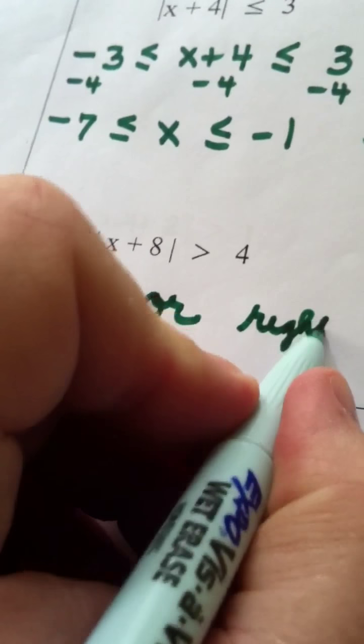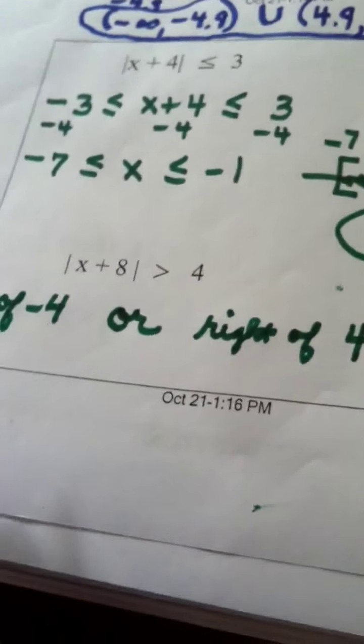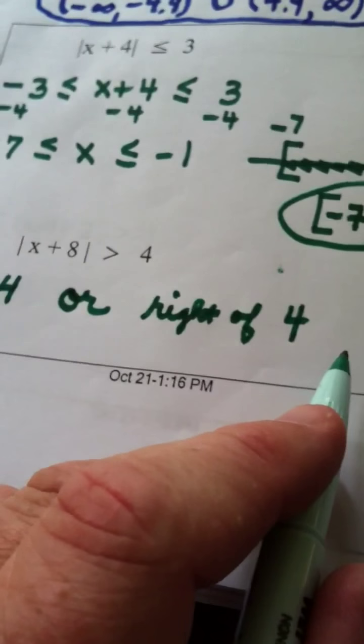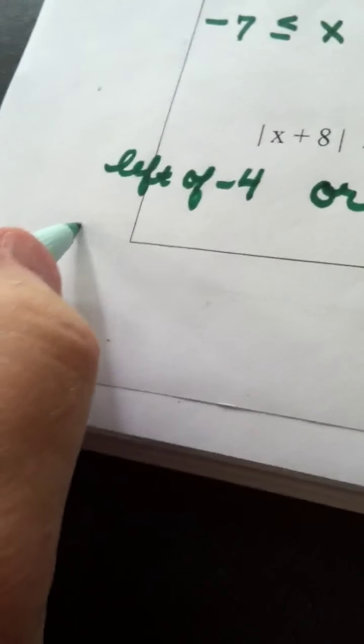Or you are to the right of positive 4. That's how you stay more than 4 blocks from me, to the left of the negative, or to the right of the positive. And remember the way we write this.